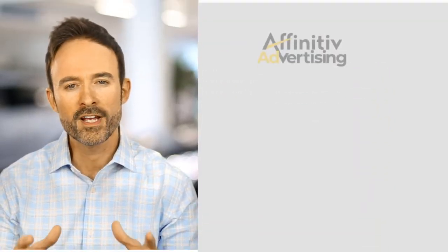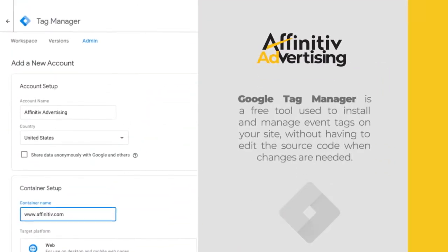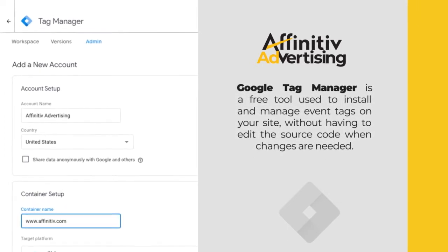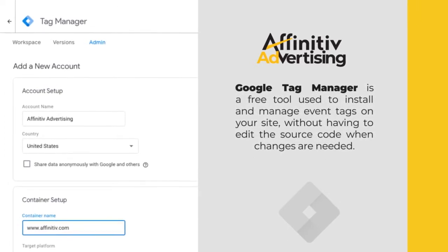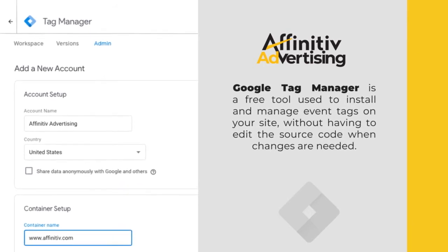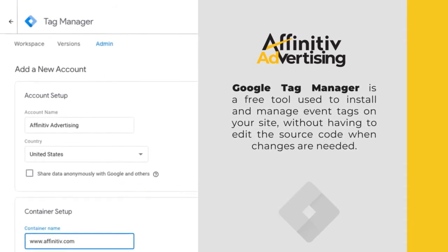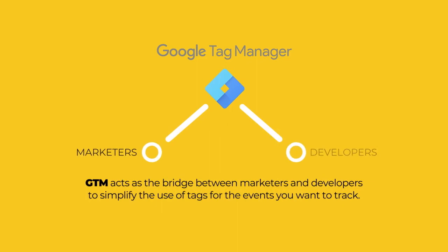So first, here's the quick explanation. Google Tag Manager is a free community tool used to install and manage event tags on your site without having to edit the source code when changes are needed. GTM acts as the bridge between marketers and developers to simplify the use of tags for the events that you want to track.